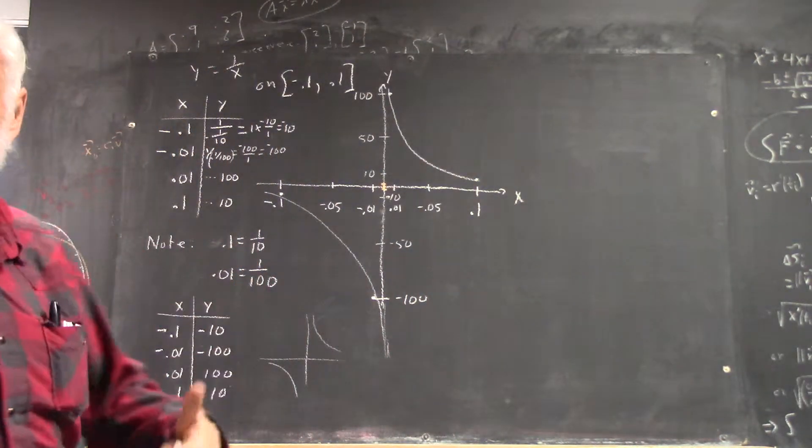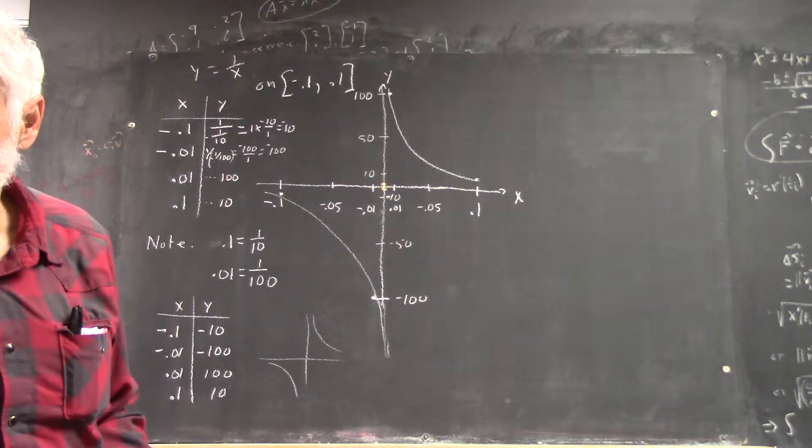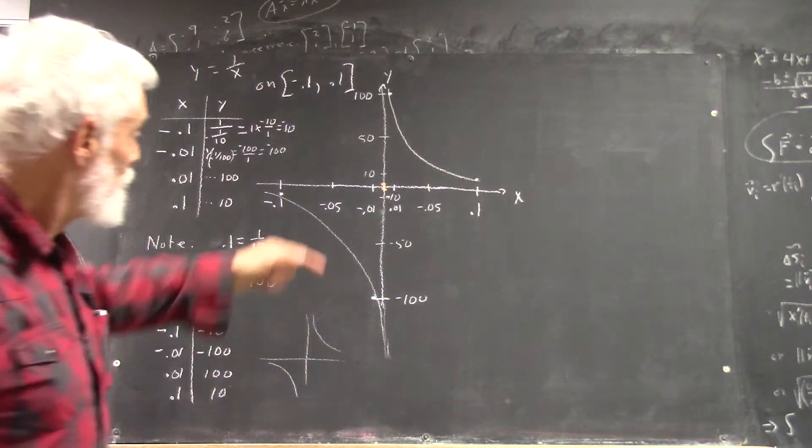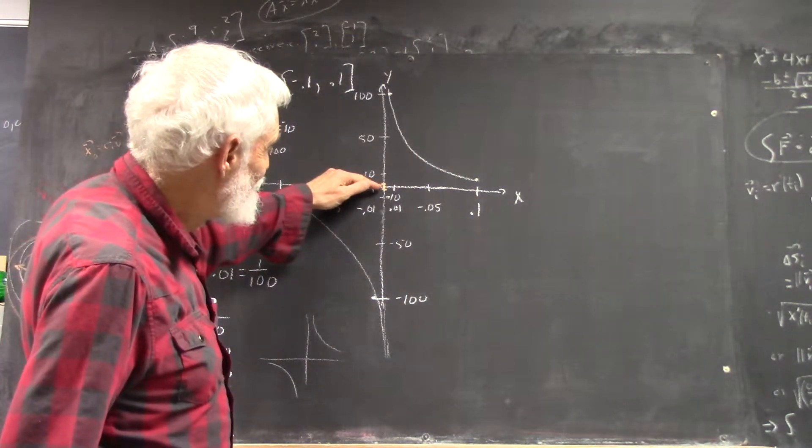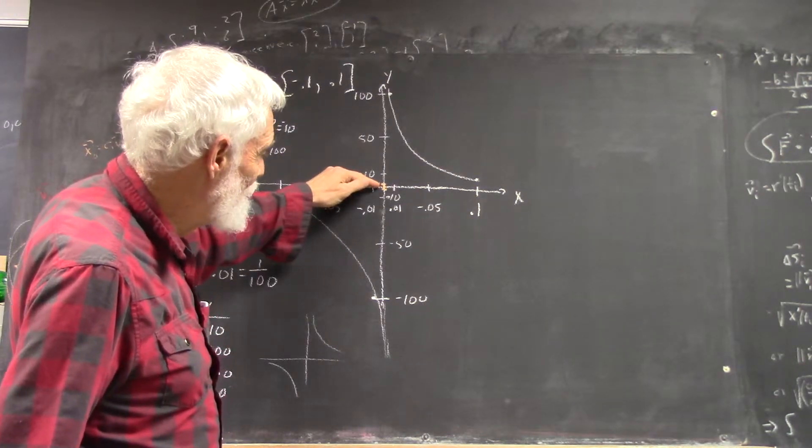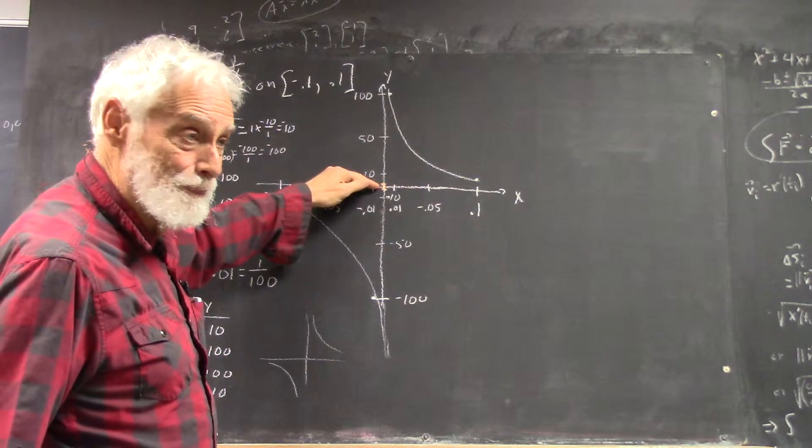And at that point, the value would be 1, wouldn't it? So, the value would be 1, which is half of what this value would be. So, on this scale, by the time x gets to 1, your y value is going to be just really tiny.